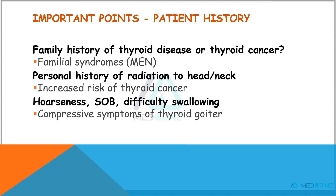Some of the important factors to consider in patient history are familial history of thyroid disease or thyroid cancers — that is a familial syndrome, for example multiple endocrine neoplasia — a personal history of radiation to the head or the neck because radiation may increase risk of thyroid cancers, and also assess for hoarseness of voice, shortness of breath, and difficulty in swallowing, as these are compressive symptoms of a thyroid goiter.